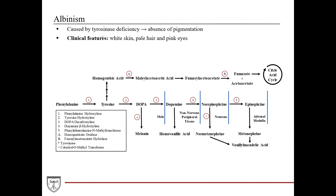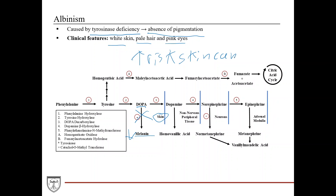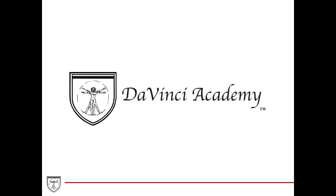Albinism is caused by tyrosinase deficiency. In the skin, tyrosinase is responsible for converting DOPA into melanin, the pigment in skin. Patients with this deficiency have decreased melanin, resulting in an absence of pigmentation — white skin, pale hair, and pink eyes. This increases the risk for skin cancer, because pigmentation normally helps protect against sun damage.